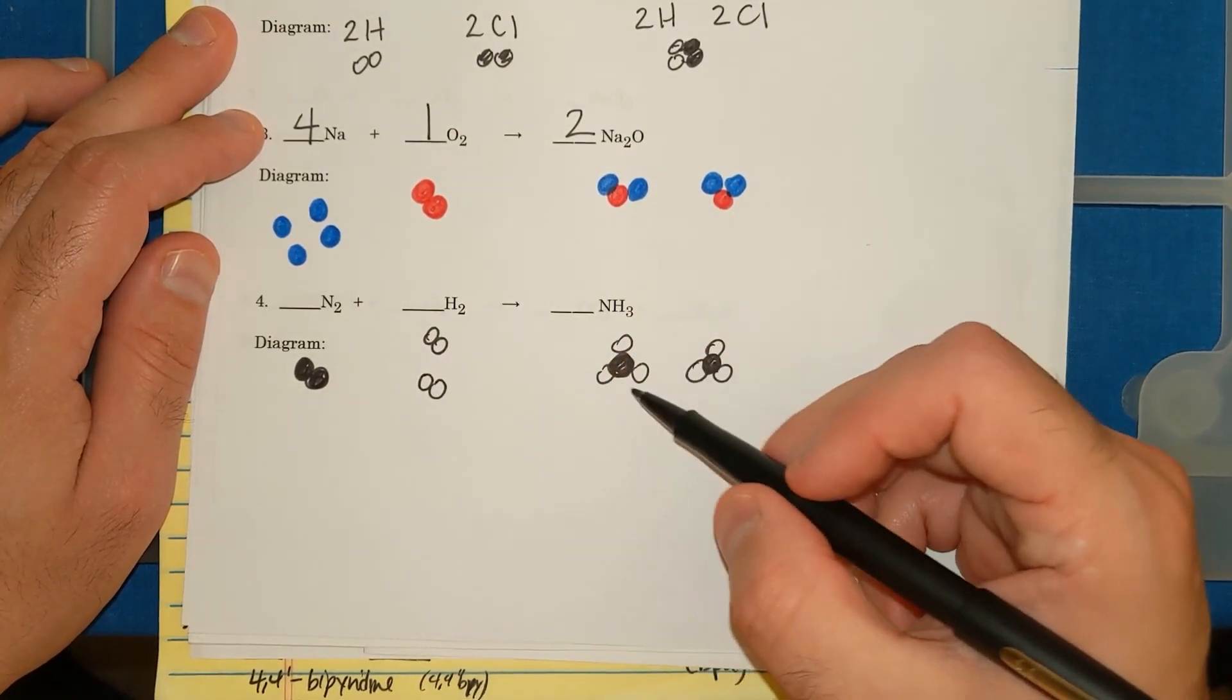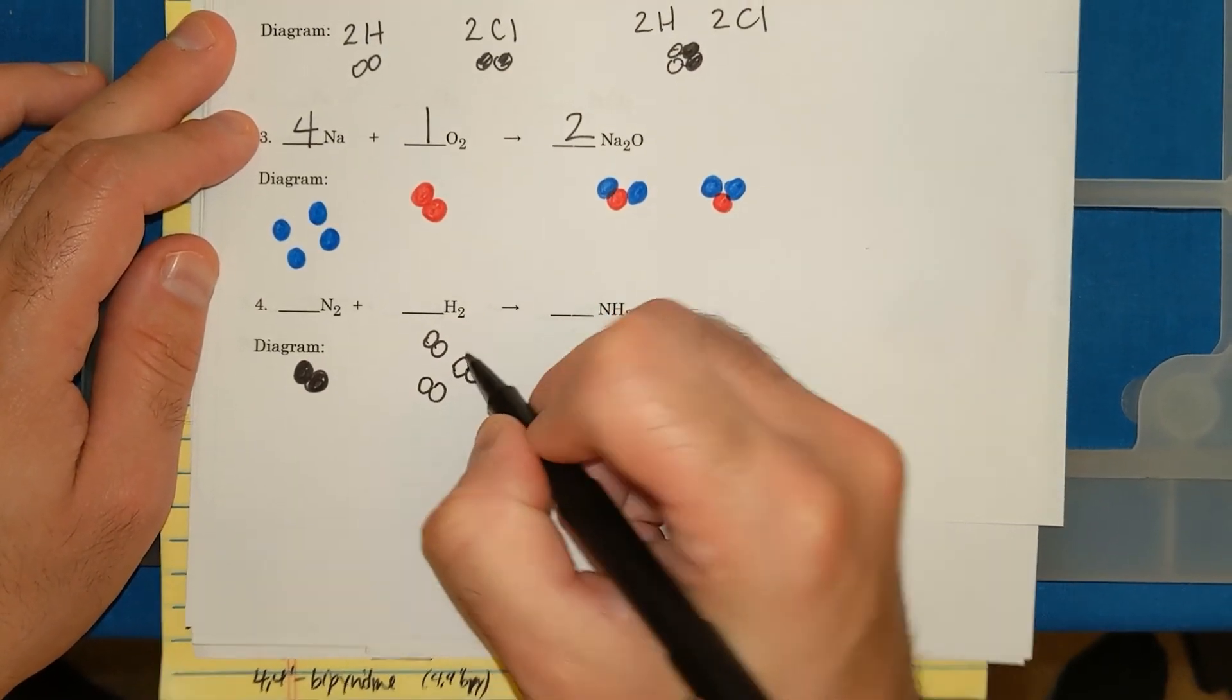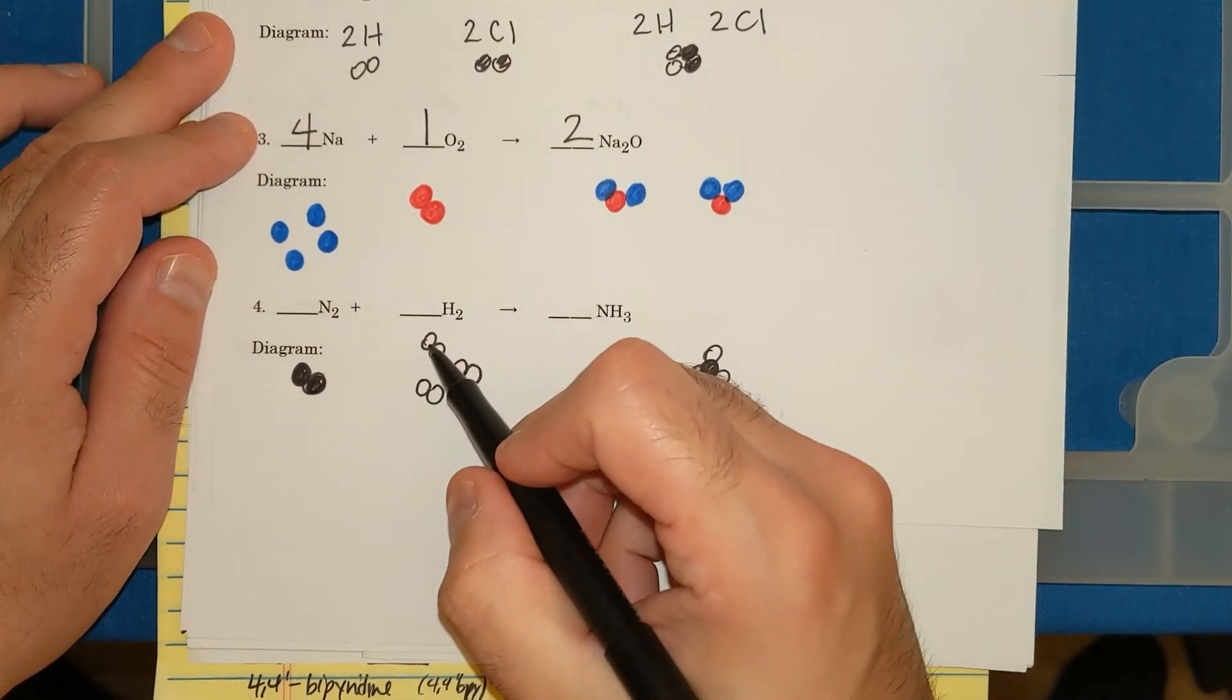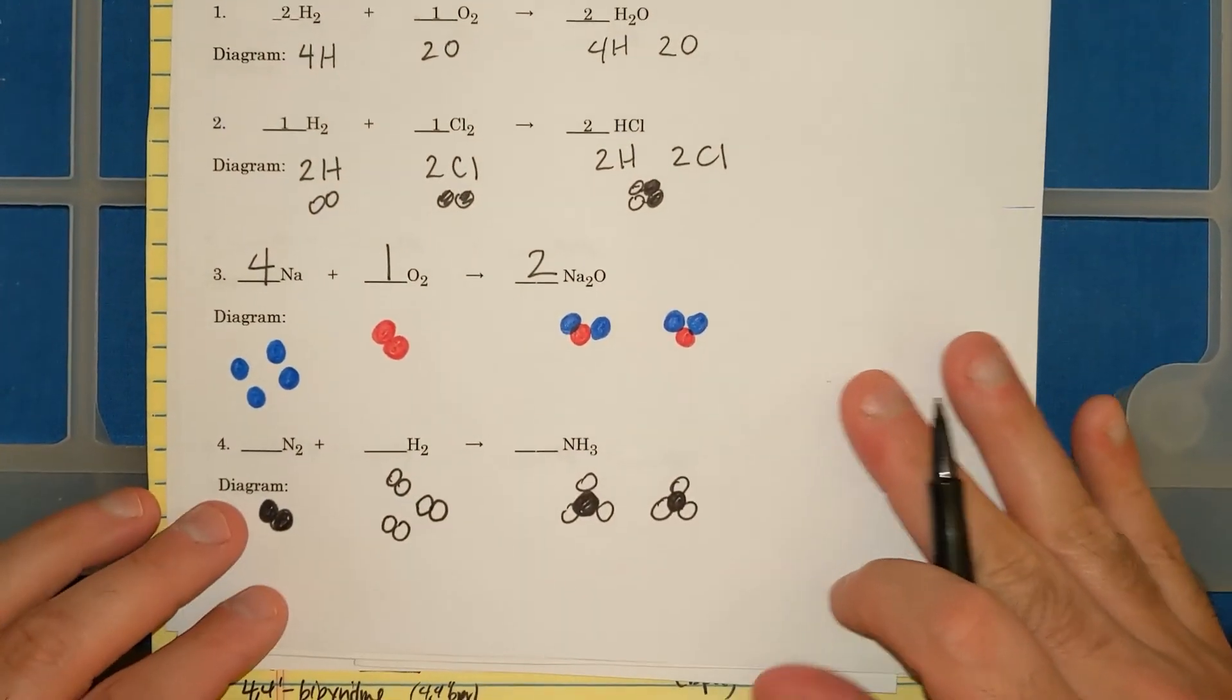And on this side, I have 1, 2, 3, 4, 5, 6. Still not enough. Let me add another H2. Look at how I'm doing this. I'm adding it and counting. I have 2, 4, 6 H's, 2, 4, 6 H's. Now, I'm good.